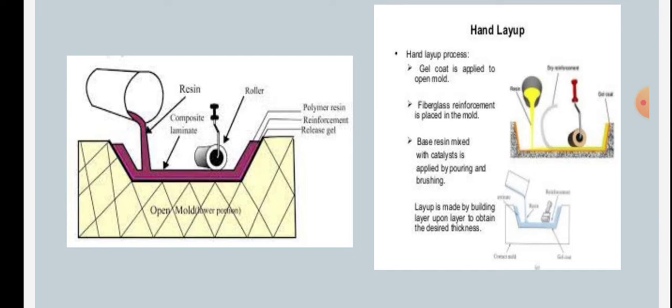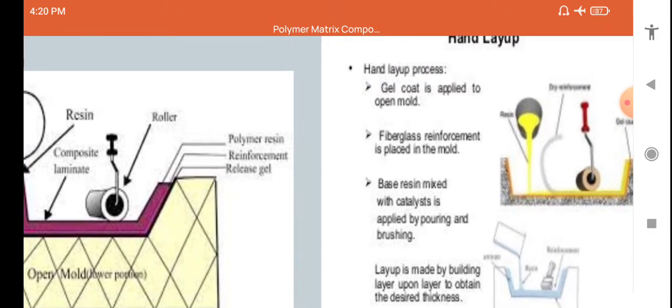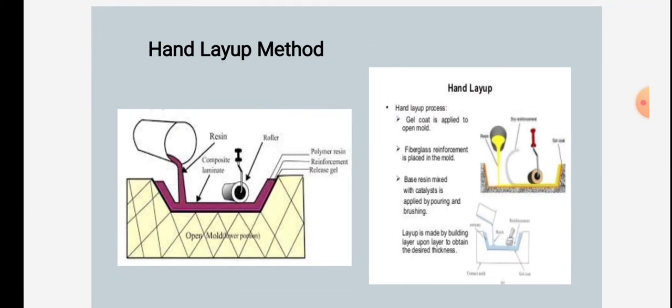Open mold, resin, composite laminate, lower roller, polymer resin, reinforcement, release gel, metal, etc. are seen in the figure. In the hand layup process, gel coat is applied to the open mold, and fiberglass reinforcement is placed in the mold.